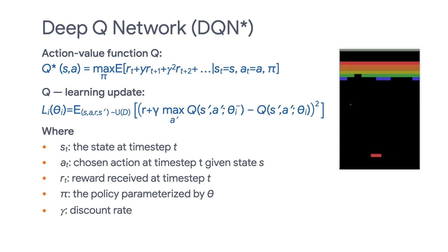what's the expected total reward for that action over the time horizon? The optimal action value function Q* gives the best value possible from any policy, which is the first equation. Intuitively,